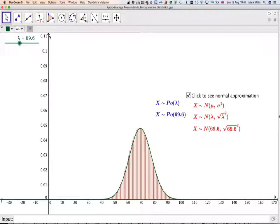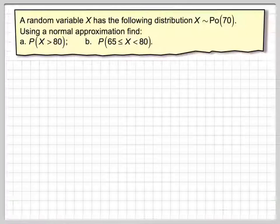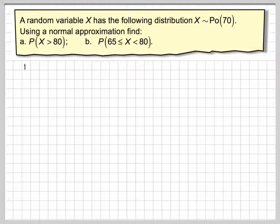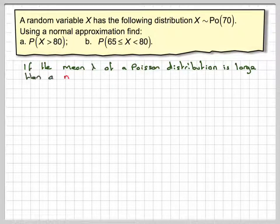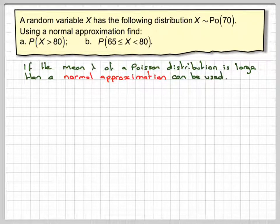This GeoGebra, I will be putting in the notes of the video, the link to it. So going back to the question, it says if the mean lambda of the Poisson distribution is large, then a normal approximation can be used.